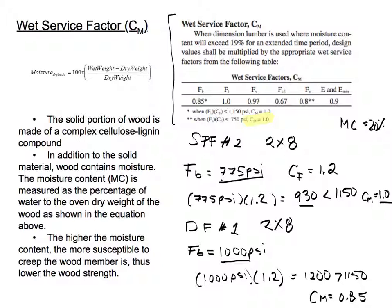For Douglas fir number one, the bending stress is 1,000 psi. We multiply with the size factor 1.2, and I'm getting a bending stress of 1,200 psi, which is greater than 1,150 psi. So in that case, because it's greater than 1,150, it's going to be 0.85.